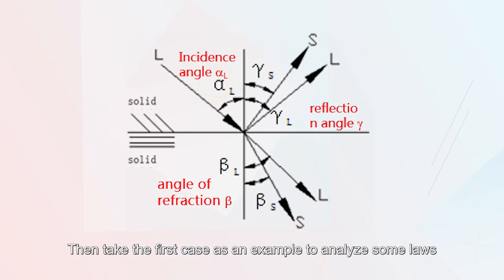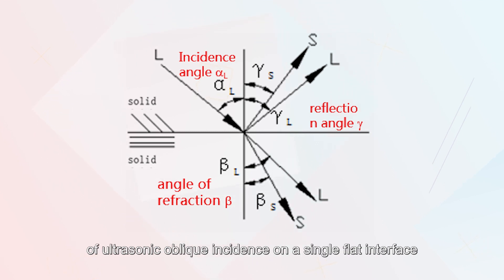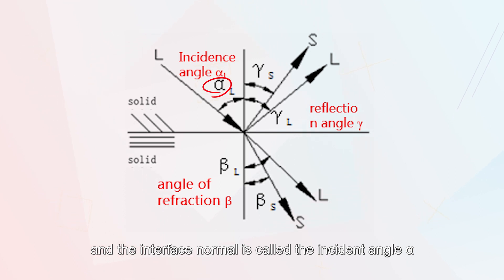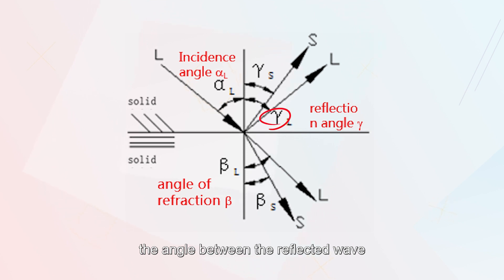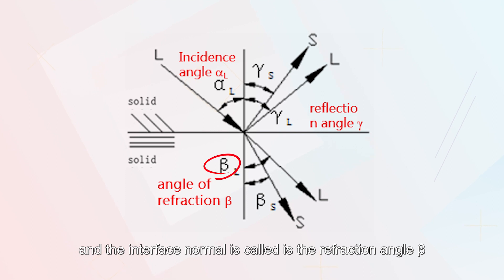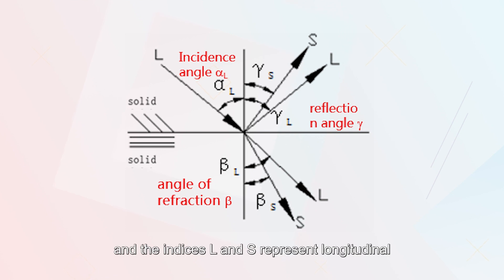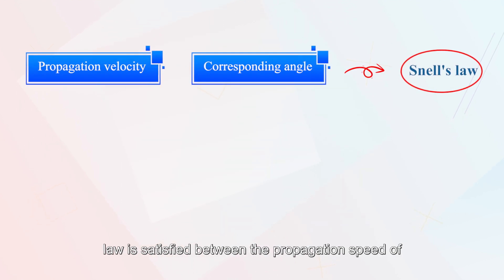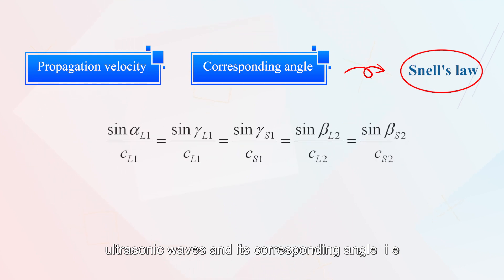Taking the first case as an example to analyze the laws of ultrasonic oblique incidence on a single flat interface, as shown in the picture: the angle between the incident wave and the interface normal is called the incident angle alpha, and the angle between the reflected wave and the interface normal is called the reflection angle gamma. The subscripts L and S represent longitudinal waves and transverse waves, respectively. Snell's law is satisfied between the propagation speed of ultrasonic waves and their corresponding angles, where the subscripts 1 and 2 represent the first and second medium, respectively.